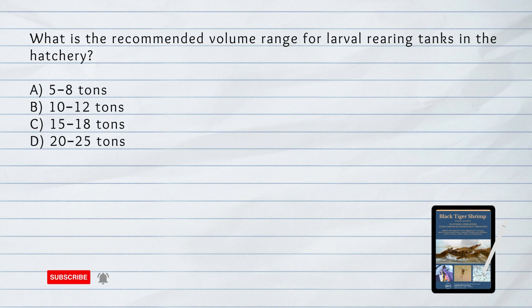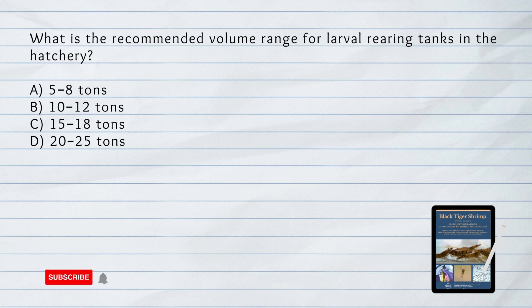What is the recommended volume range for larval rearing tanks in the hatchery? B. Larval rearing tanks are preferably manageable and have capacities ranging from 10 to 12 tons, ensuring optimal conditions for rearing larvae.